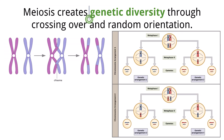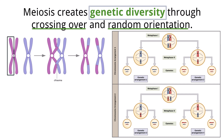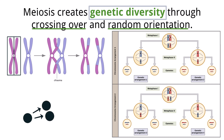Meiosis generates genetic diversity by crossing over and random orientation. During interphase, when DNA is copied, the cell makes a complete copy of all its genetic information, resulting in each chromatid having an identical copy, or sister chromatid, attached to it. Because meiosis produces four genetically different cells, the cells must divide twice. Meiosis I produces two cells, and then each of these cells divides during meiosis II, producing four cells. A major difference between mitosis and meiosis is that there is no crossing over in mitosis.